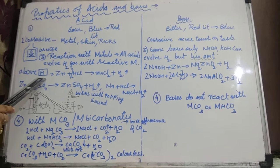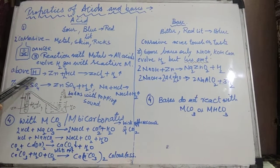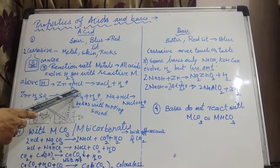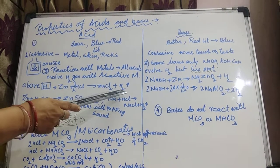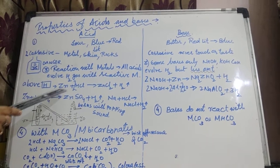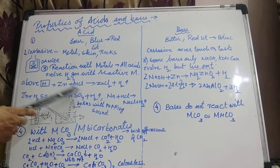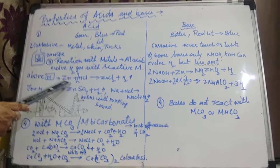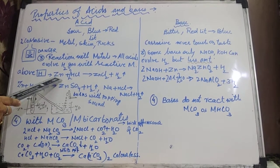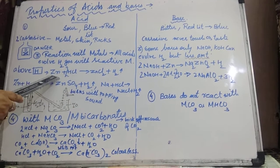Reactive metals meaning — metals which are present above hydrogen in the reactivity series. Whatever metals are placed above hydrogen have the tendency to displace hydrogen from the acids, and that hydrogen evolves out as hydrogen gas.